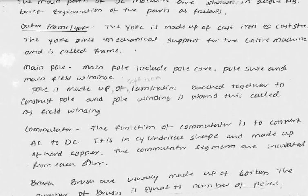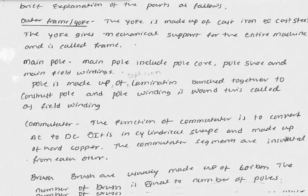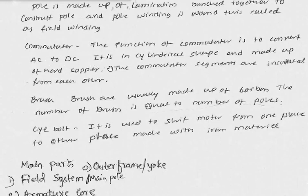The yoke is made of cast iron or cast steel and gives mechanical support. The main pole includes pole core, pole shoe, and main field winding. The pole is made up of laminations stacked together, with field winding wound on the pole core. The commutator's function is to convert AC into DC — it is cylindrical, made of hard copper, and the segments are insulated from each other using mica. The brush is usually made of carbon, and the number of brushes is equal to the number of poles.